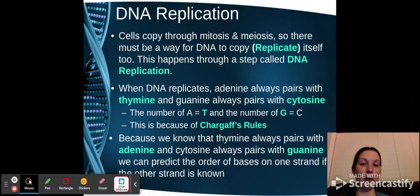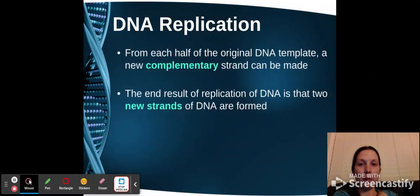Because we know that thymine always pairs with adenine and cytosine always pairs with guanine, we can predict the order of the bases on one strand if we know the other. So if we know half of a strand of DNA, we're going to be able to figure out the other knowing their partners. From each half of the original DNA template, a new complementary strand can be made because of those partnerships. And then the end result of this replication are two strands of the DNA are now formed and they will be identical.